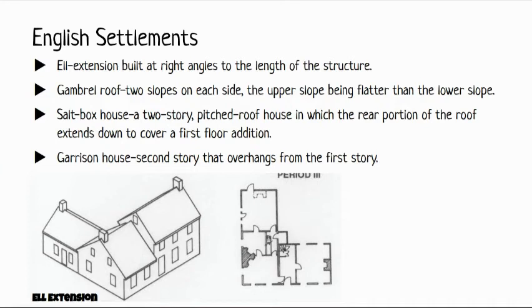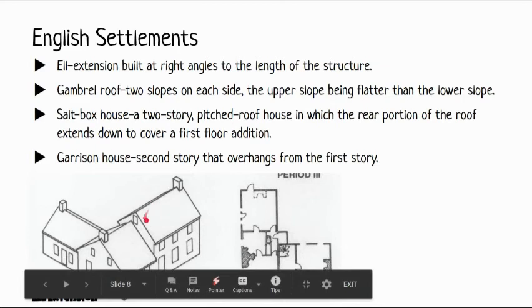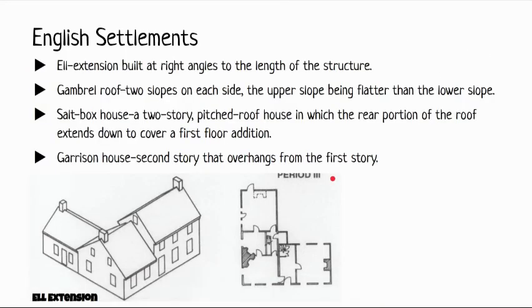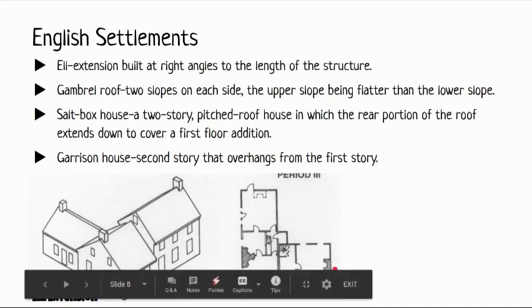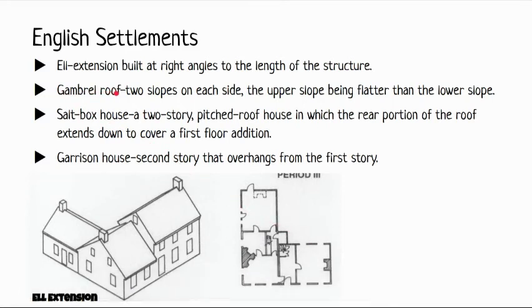As families expanded, adding extensions to existing homes became necessary rather than building entirely new ones. One popular extension was called an 'L' — built at right angles to the length of the original structure. The original home forms one side, and additional rooms extend outward, creating a shape that looks like the letter L when viewed from above. The main door and chimney remain off to the side on the original section.